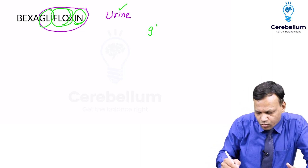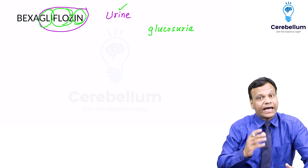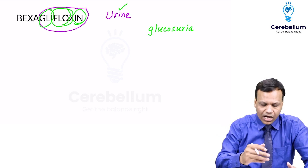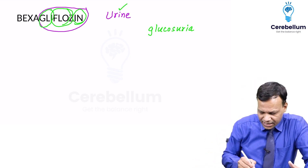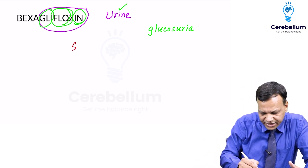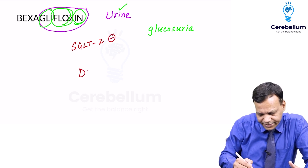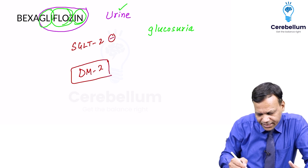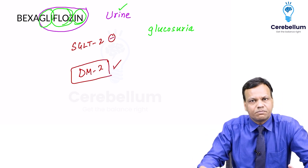So they result in glucosuria. All gliflozins — like Canagliflozin, Dapagliflozin — and the new drug Baxagliflozin are SGLT2 inhibitors. This drug is also an SGLT2 inhibitor and is indicated in type 2 diabetes mellitus.